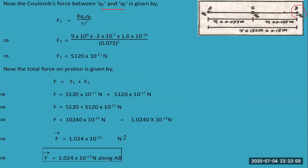Now let's calculate the Coulomb's force between q2 and the proton placed at point C. After putting the values, you have calculated the force acting from charge q2 on the proton. Then you will calculate the total force, which will be equal to F1 plus F2.